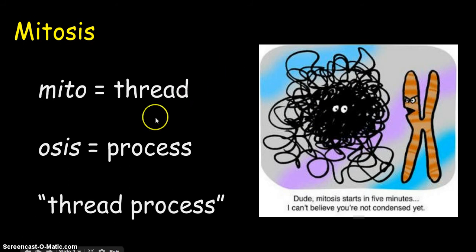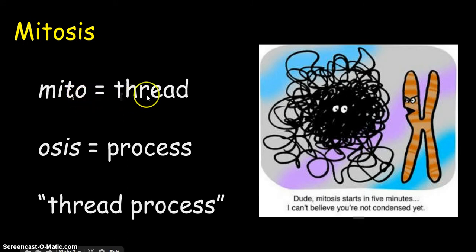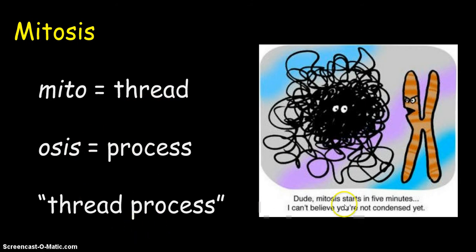Here is mitosis. Here's a little breakdown of what the process actually involves as far as the words. Mito means thread, and osis means process — those are both Greek roots. So really, it means thread process, which is kind of weird. And hopefully, by the end of the presentation, you'll kind of get this joke here, where this chromosome is kind of yelling at these threads of DNA over here.